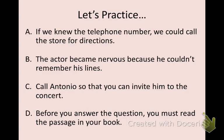Let's look at sentence A: "If we knew the telephone number, we could call the store for directions." We can see the sentence begins with the subordinating conjunction "if," so the adverb clause goes all the way until the comma. Within that adverb clause, we have a subject — "we" — and a verb — "knew." The rest of the sentence, "we could call the store for directions," is an independent clause: it has a subject, a verb, and it can stand alone as a sentence.